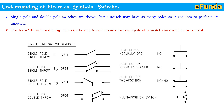Also shown are push button normally open, push button normally closed, and the push button two-position switch with NC and NO combination. Multi-position switches are also shown — for example, a fan regulator for controlling speed where increasing and decreasing can occur simultaneously as you move the switch position.